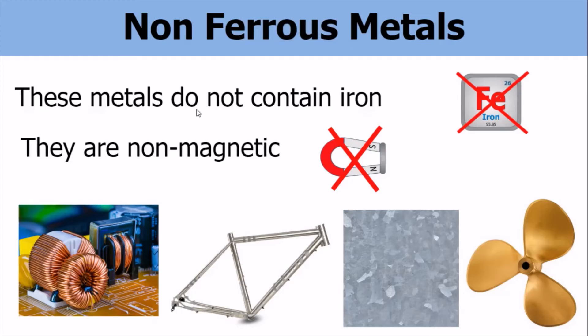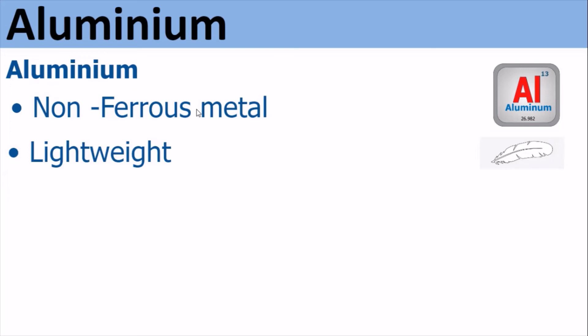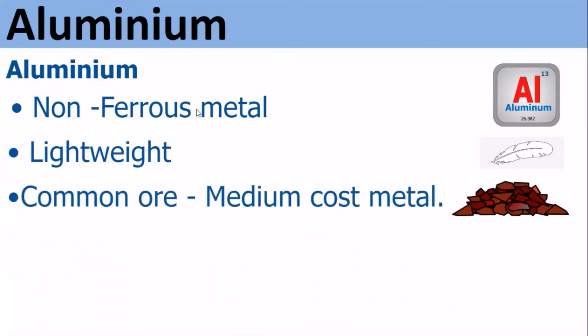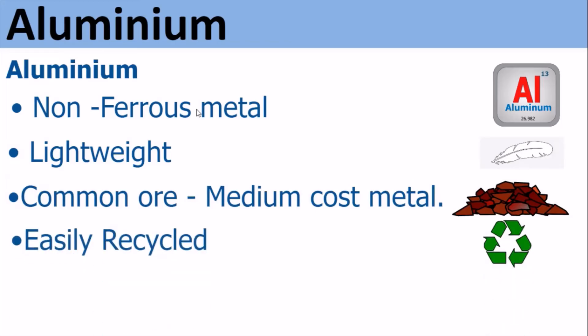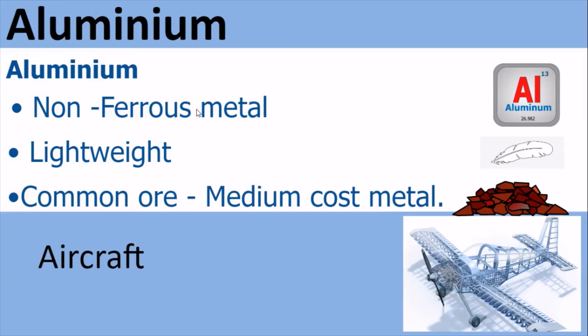Non-ferrous metals. These metals do not contain iron and are not magnetic. Aluminium is a non-ferrous metal and an element. It is lightweight and a common ore, making it a medium cost metal. It is very easily recycled, and recycled aluminium is used in the processing of new aluminium. It is corrosion resistant, though it will corrode electrolytically with steel. It is mainly used for making aeroplanes because of its lightweight.